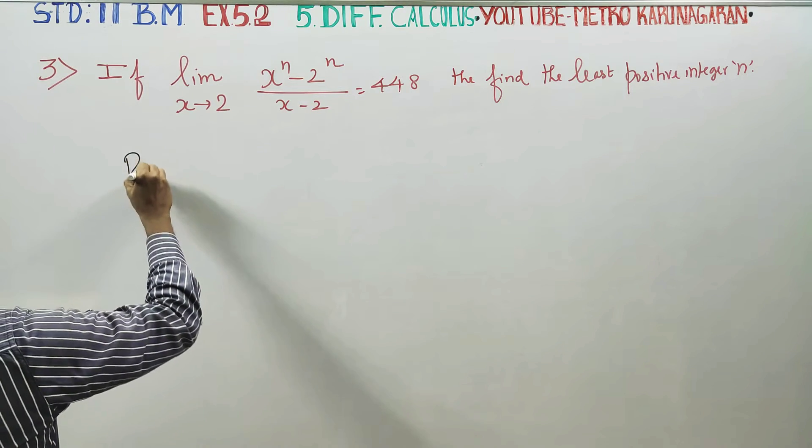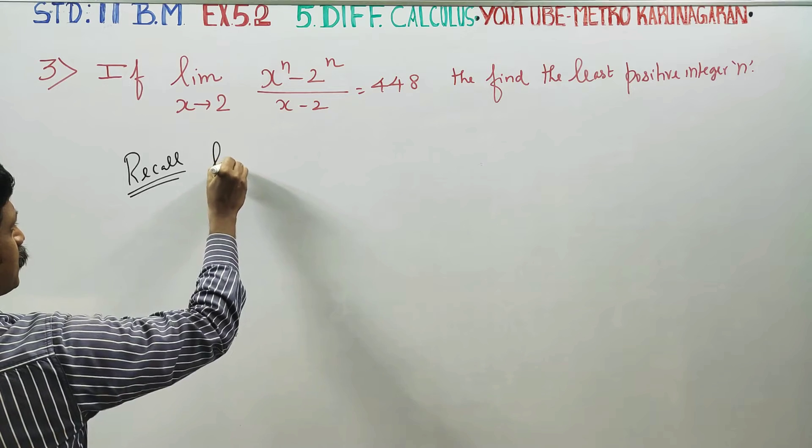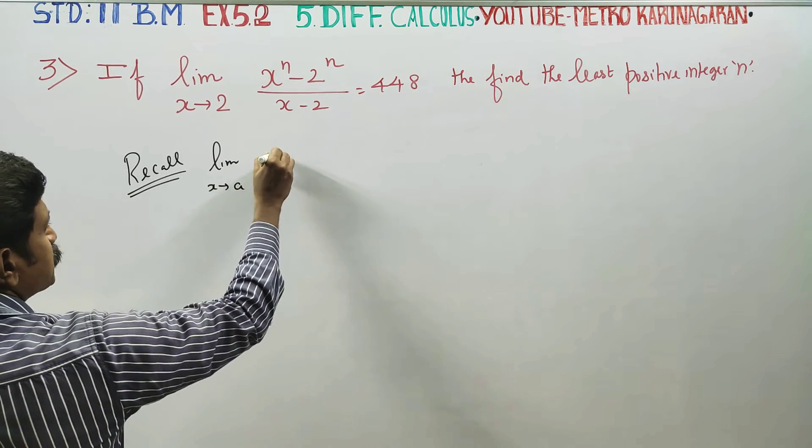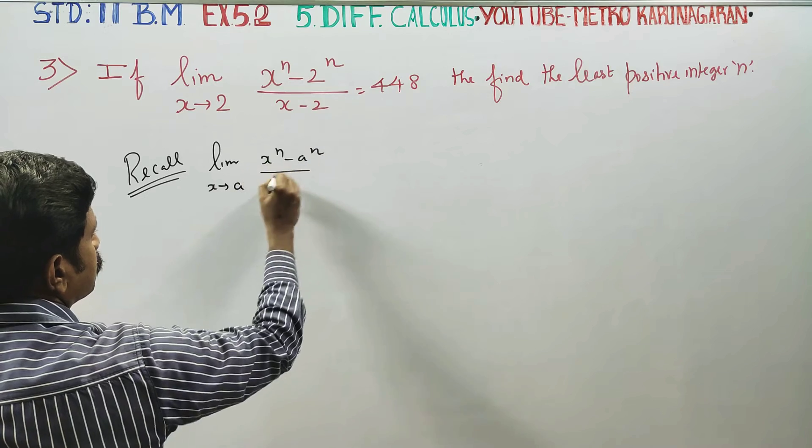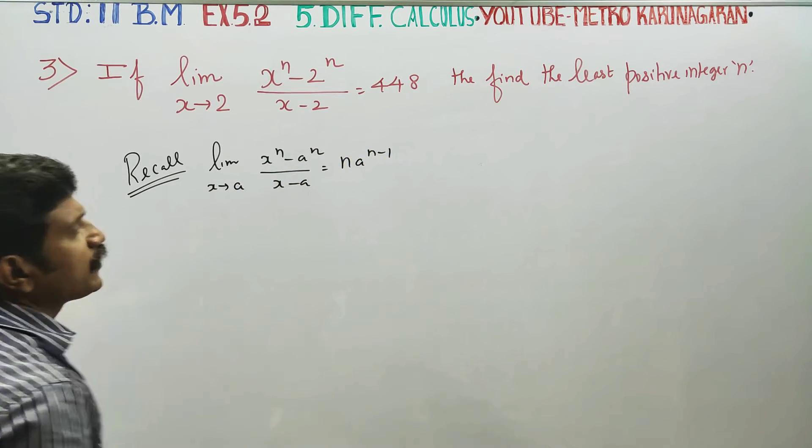Therefore we have to recall a standard formula, the standard result for this: limit x approaches a, x power n minus a power n divided by x minus a is equal to n times a power n minus 1. We'll use this formula.